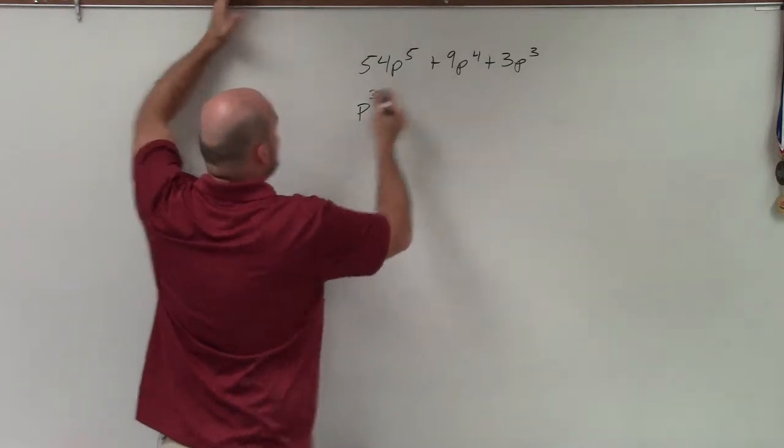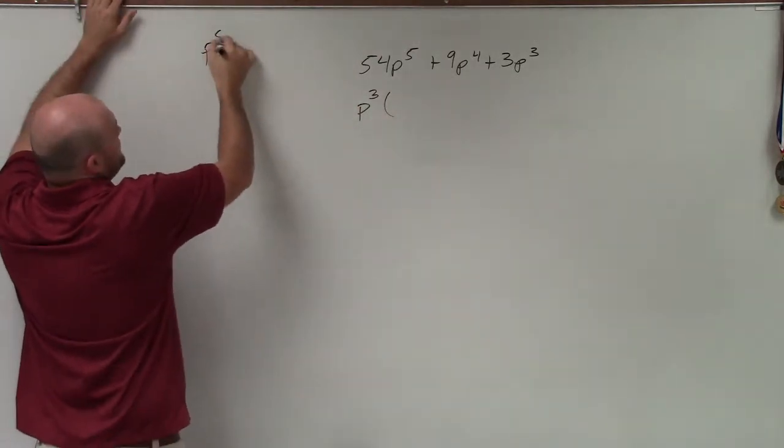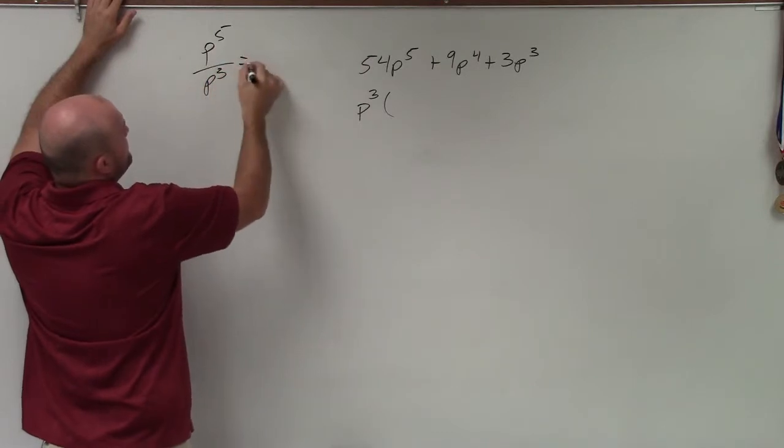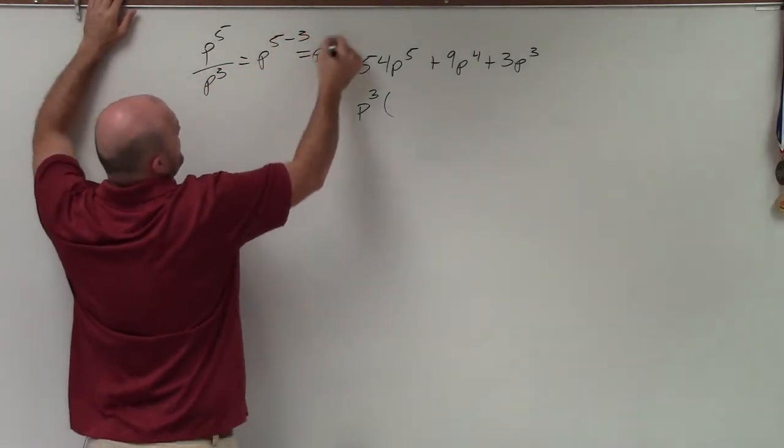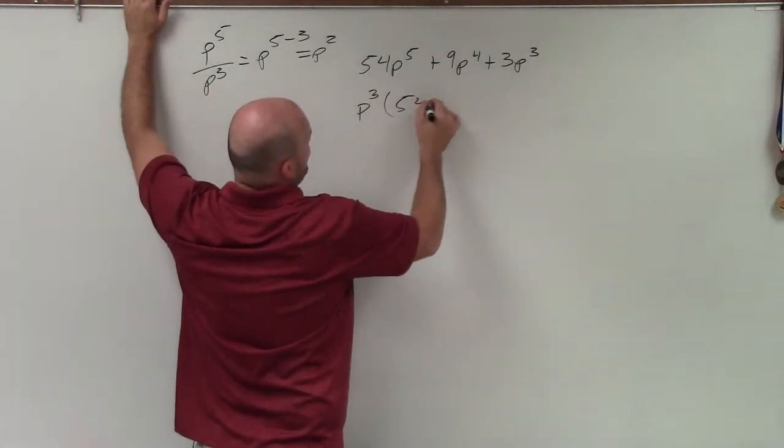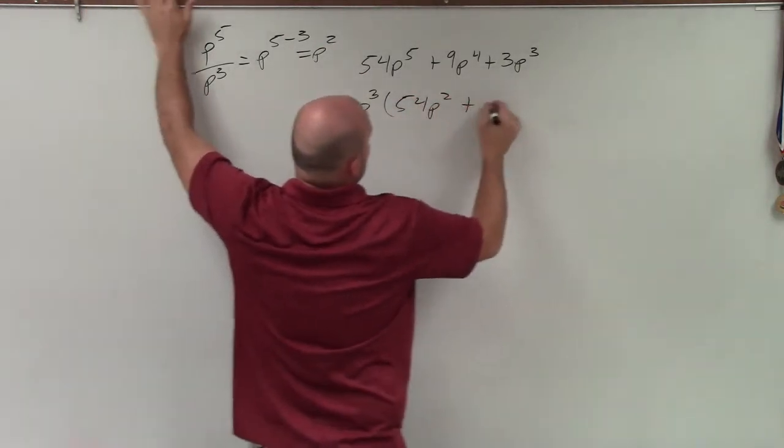and pretty much what I'm doing is p to the fifth divided by p to the third, which is pretty much p to the 5 minus 3, which equals p squared. So I'm left with 54p squared plus 9.